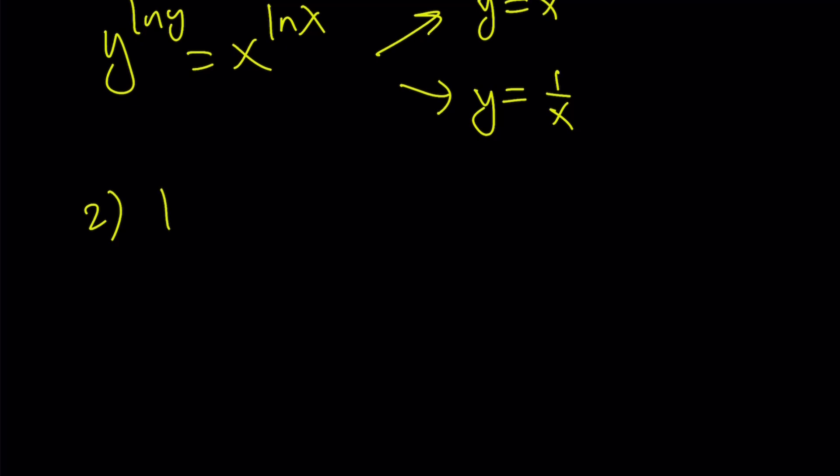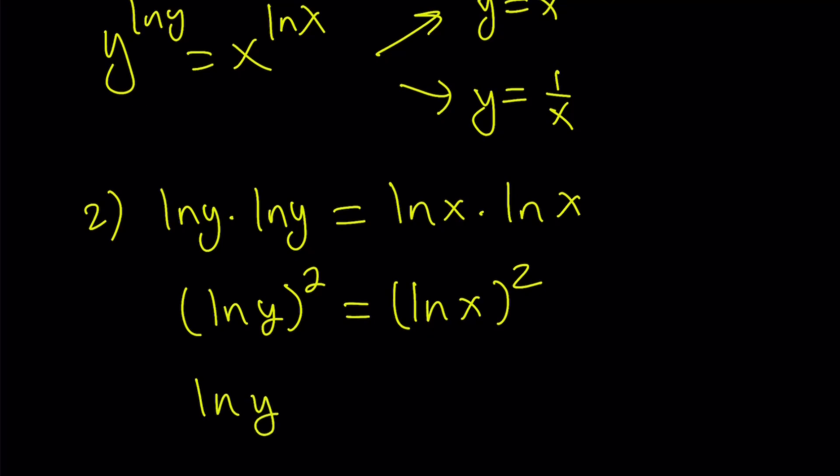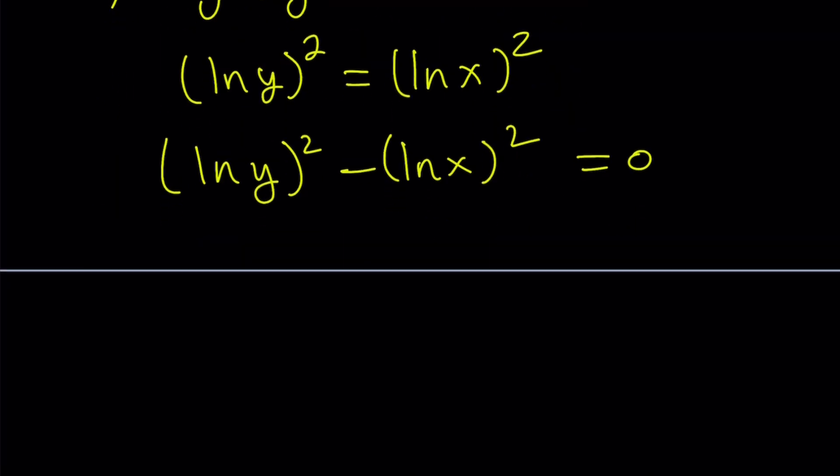So this is the first method. The second method after cross multiplication: ln(y) times ln(y). If you multiply something by itself, you get that thing squared, don't you? So this is ln(y)^2. And this is ln(x)^2. So we have a squared equals b squared. Put everything on the same side. And if you said difference of two squares, you got it right. So we have difference of two squares. Then we can factor it: (ln(y) + ln(x))(ln(y) - ln(x)) equals 0.